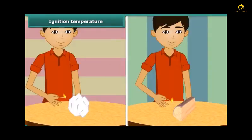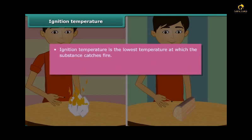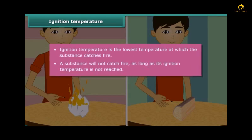We just saw that paper burns when lighted with a matchstick. Now bring the matchstick close to a piece of wood. The piece of wood does not catch fire — one lighted matchstick is not able to burn the piece of wood, but a piece of paper burnt quickly. This is because the piece of wood has not reached its ignition temperature. Ignition temperature is the lowest temperature at which a substance catches fire.